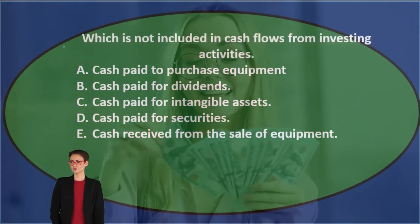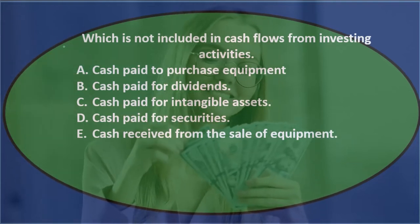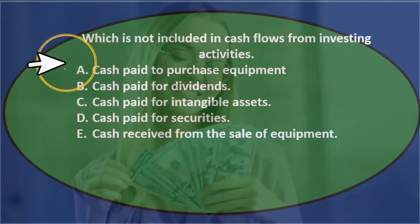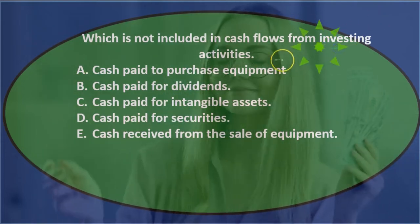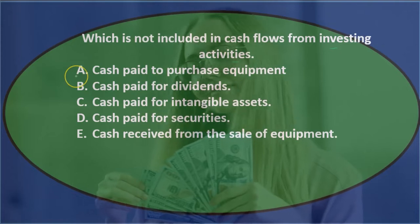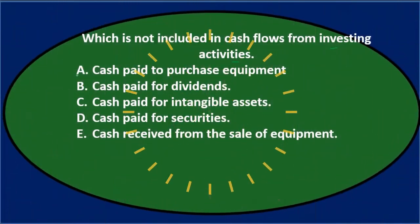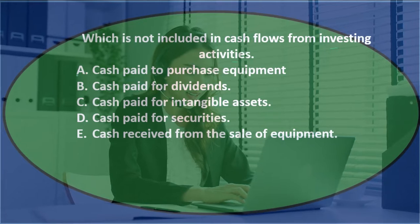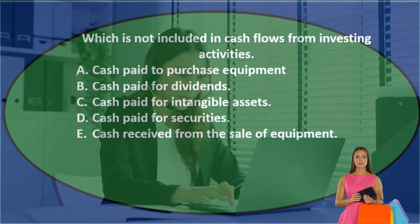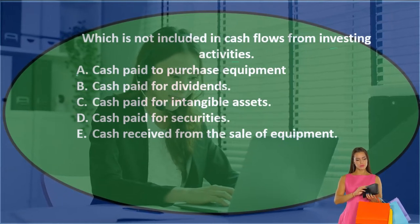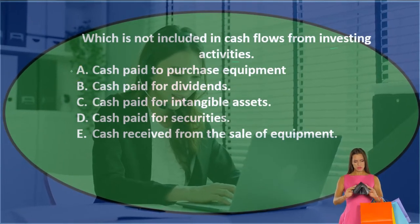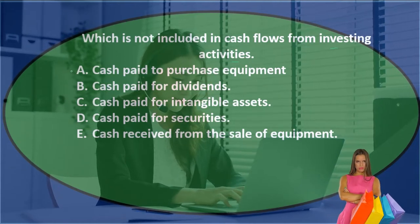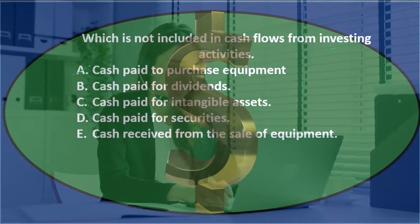For each option, we'll think of the journal entry and go through our thought process. Option A: cash paid to purchase equipment. The journal entry would be to debit equipment and credit cash. Is there an income statement account? No — equipment is an asset account. Did we buy something of substantial value? Yes. Therefore it would be investing, not operating. So A is not the answer because we're looking for something not included in investing.